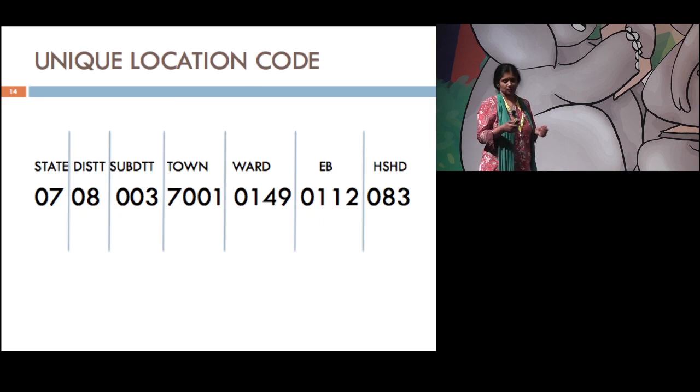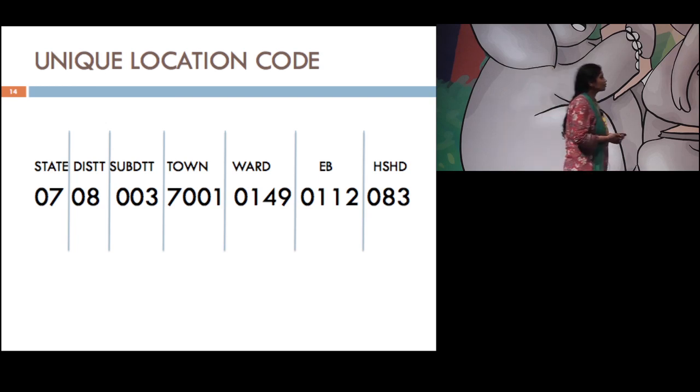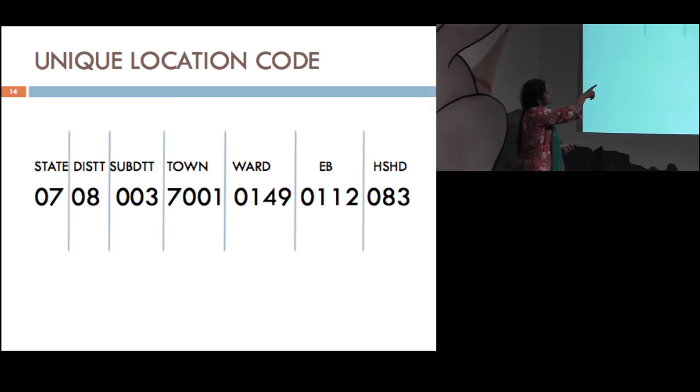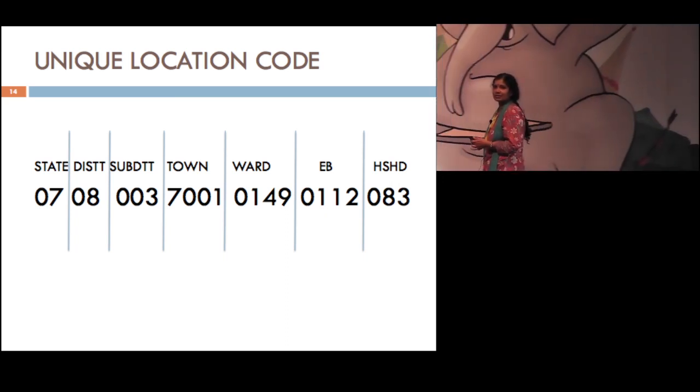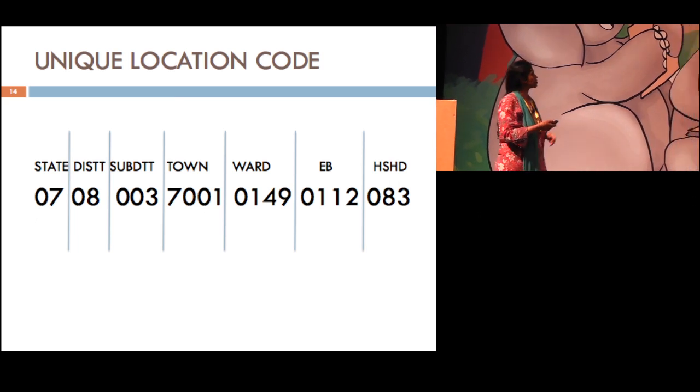On the basis of these geographical administrative units, the latest maps, the enumerator blocks we cut, we create this code, and this code is the key for the entire system of maintaining the data. This is a hierarchical code which leads right down to the household. It starts from the state, district, sub-district, town or village, ward in the case of the town, the enumerator block, and the household. So each and every household in the entire country has a unique code. This is how we ensure that data doesn't go from one place to another.